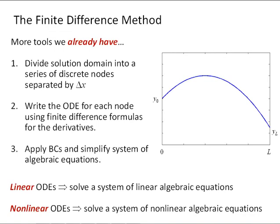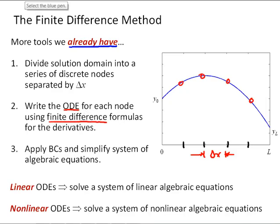First, let's review the process for the finite difference method. This is an application of tools that we already have from earlier in the class. We're going to divide the solution into discrete steps over the domain, separated by a distance delta x. At each of those steps, we'll solve for the value of the solution by writing the differential equation using finite difference formulas for the derivatives. Finally, we will apply the boundary conditions and simplify the system of algebraic equations.